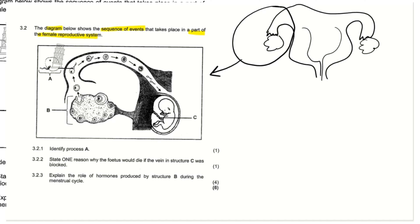We can see that these are the ovaries. Part B is actually the ovaries, and they are releasing something here. That something meets something else, and when they meet, something happens and it develops — to something else, to something else — and eventually it develops into something we can recognize as a baby. This is just describing how a baby develops from two cells.